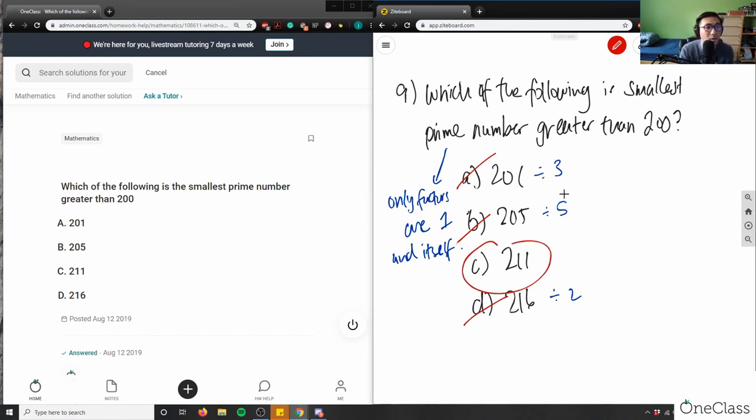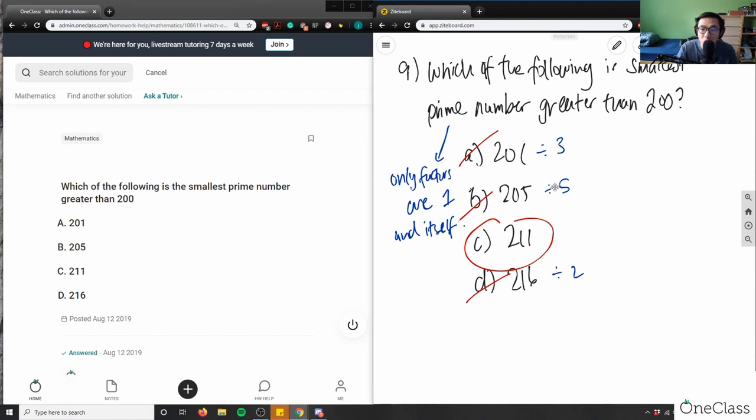211 is indeed a prime number, and it is not divisible by anything. If you have a calculator, you can check this. If I take the square root of 211 here, I don't get a simplified root. Therefore, it is the smallest prime number greater than 200.